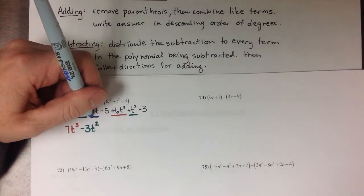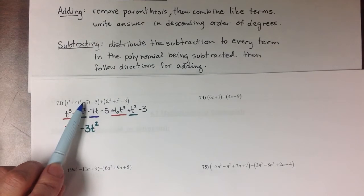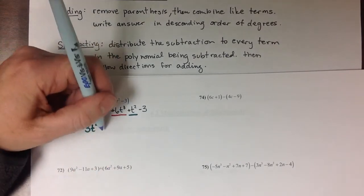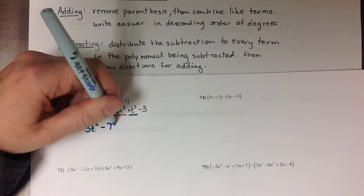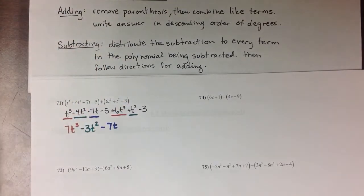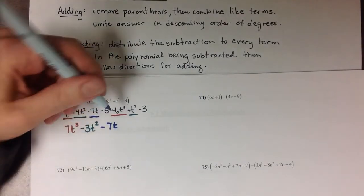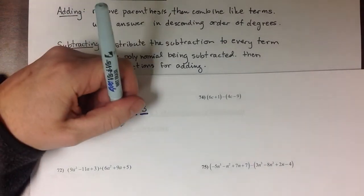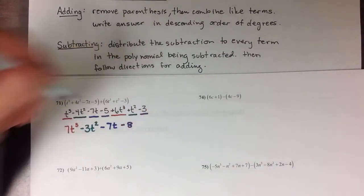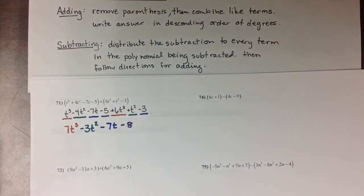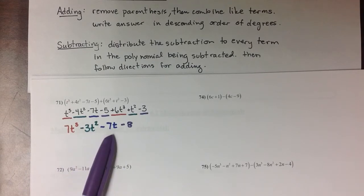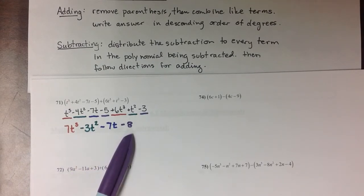For the t terms, there's a -7t in this first polynomial. The second polynomial didn't have a t term, so I'm just going to carry that -7t down. And then at the end, my constants, -5 and -3, is going to give me a total of -8. So these two polynomials, when added together, end up equaling 7t³ - 3t² - 7t - 8.